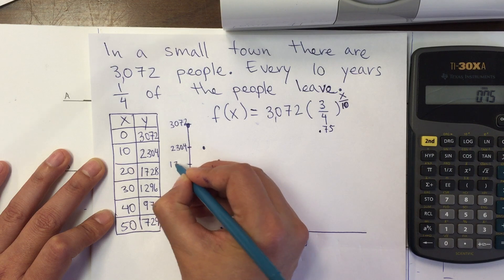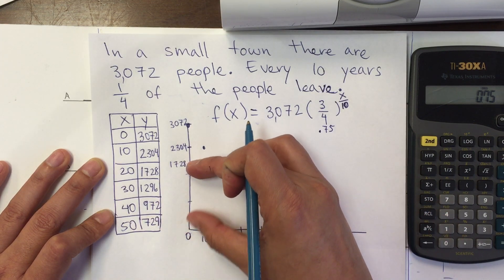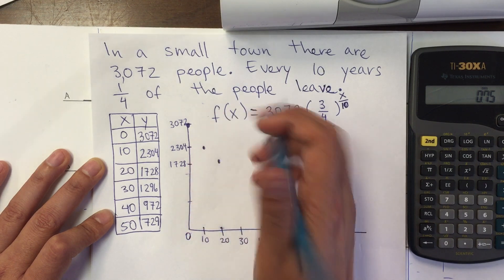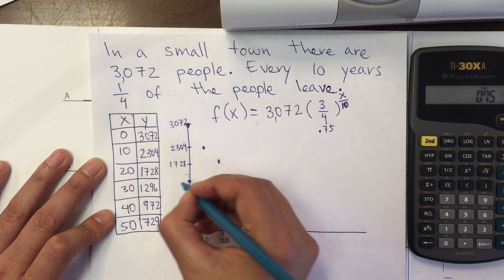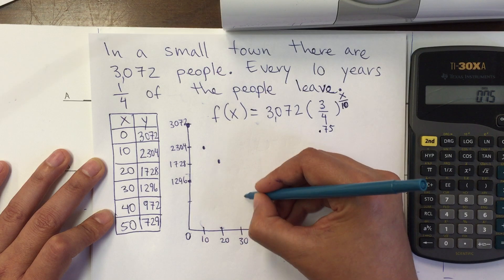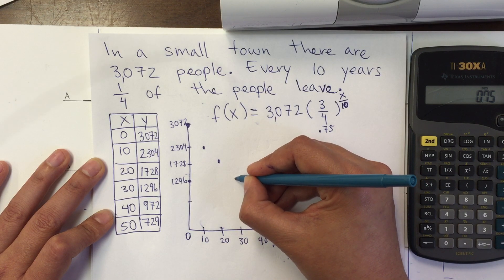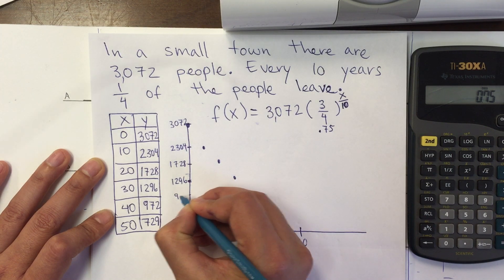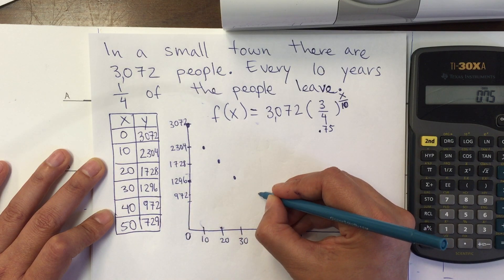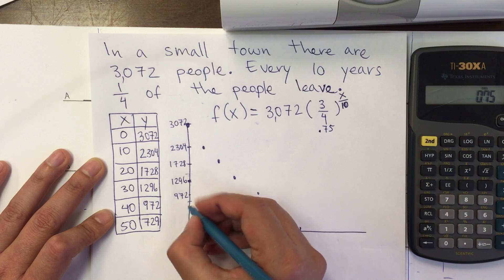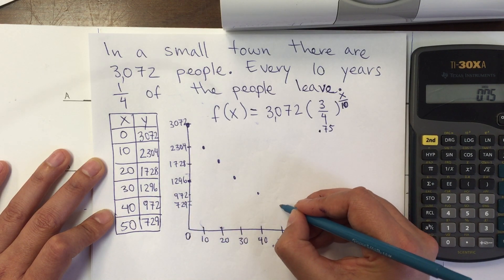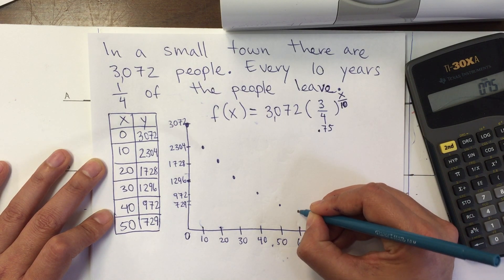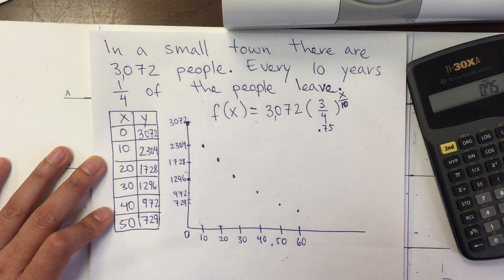At x = 20 years the value is 1,728, so I plot that at three-fourths of the previous value. At x = 30 it's 1,296, plotted here. Then 972 at x = 40, and 729 at x = 50. Each point is three-fourths of the one before it.